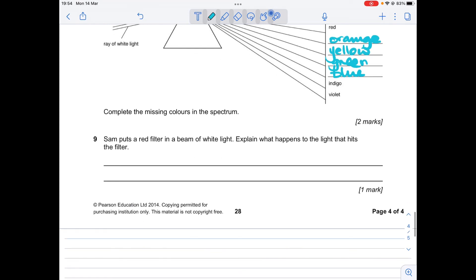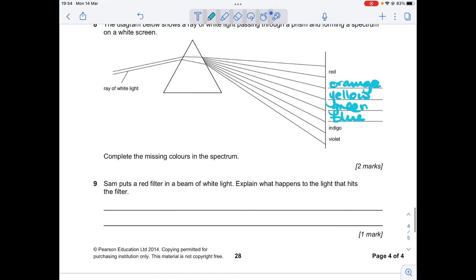Sam puts a red filter in a beam of white light. Explain what happens to the light that hits the filter. So you remember when you put a filter in, like a red filter, only red light can be transmitted through. All the other colors of light would be absorbed. So you need both marks to get this mark. You need to say what happens to the red light, but you also need to say what happens to all the other colors.